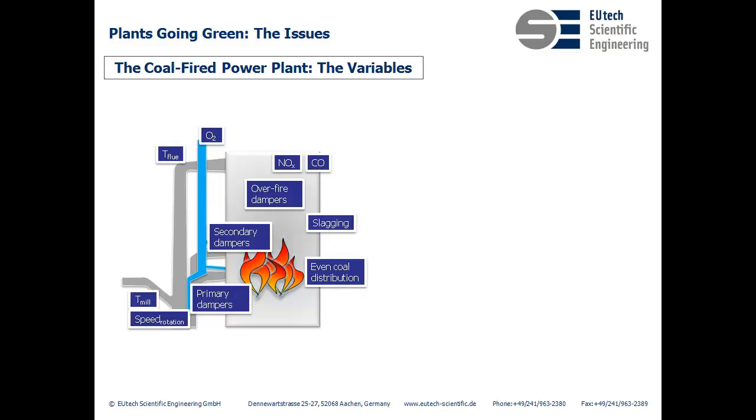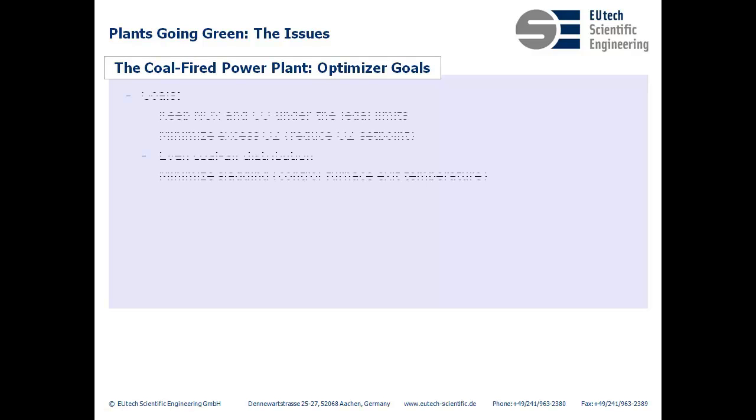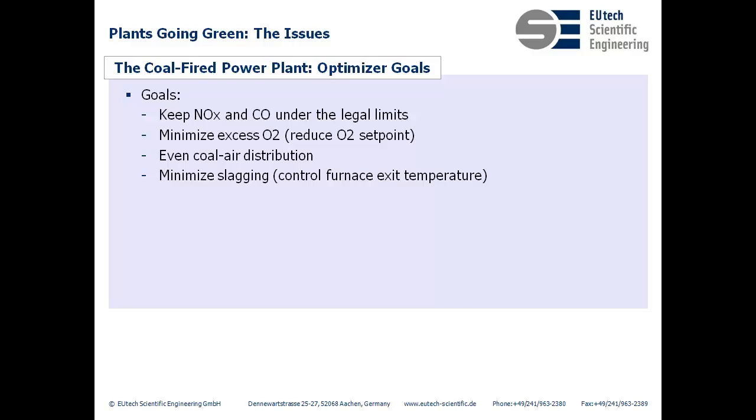That said, I'm going to go over the goals now we have for such an optimizer. Foremost, the optimizer has to ensure that both NOx and CO remain under the legal limit. With that constraint, it then aims to minimize the amount of oxygen needed to improve the efficiency.